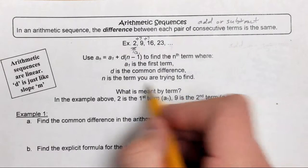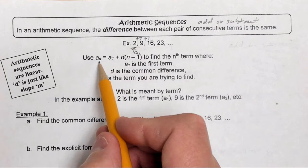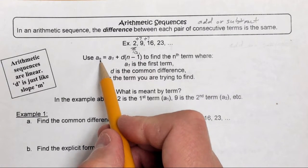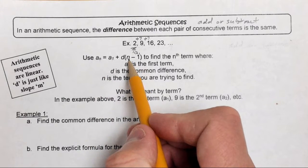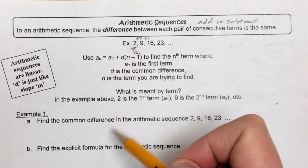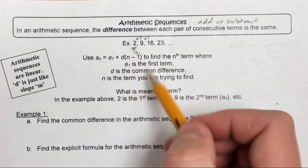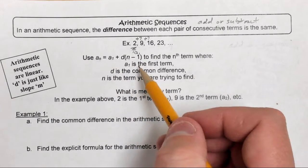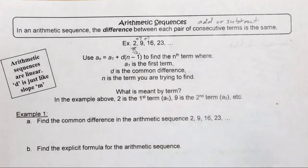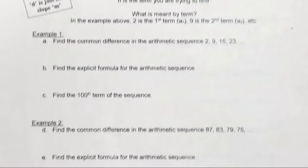N is the term you're trying to find. So if I want to find the 50th term, I put 50 in for n. This is a bit confusing without an example, so let's jump into one and talk about how this equation works.